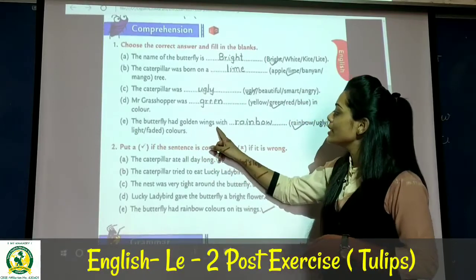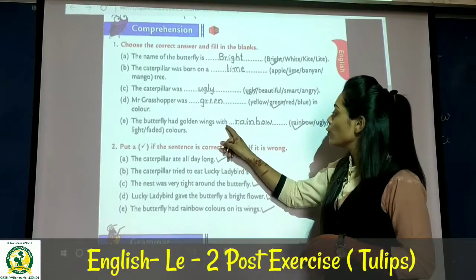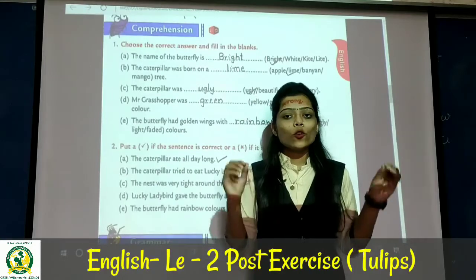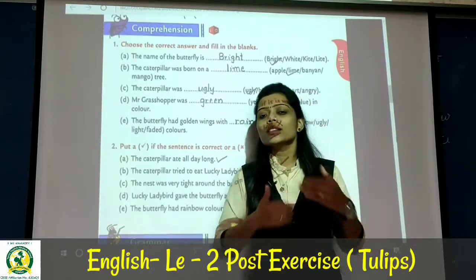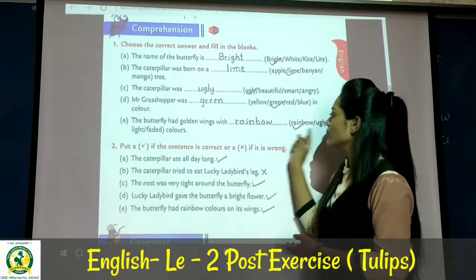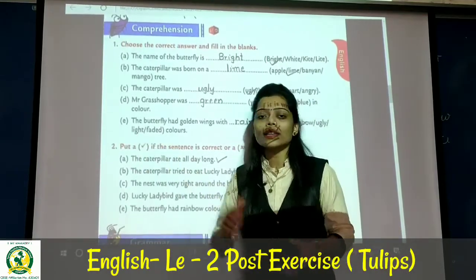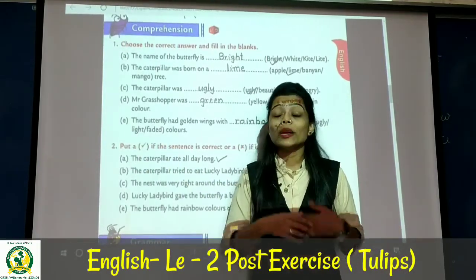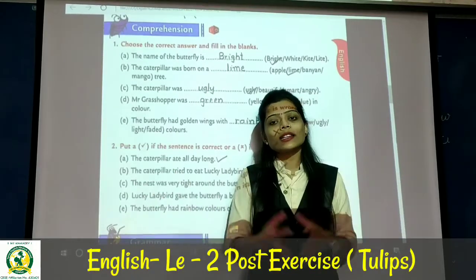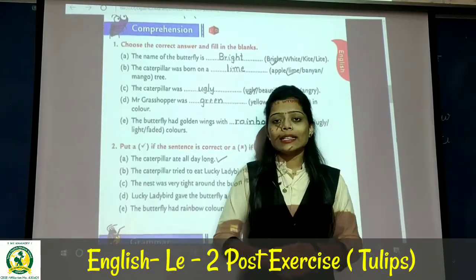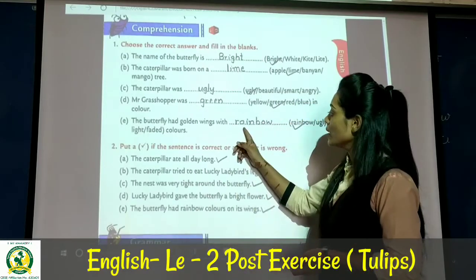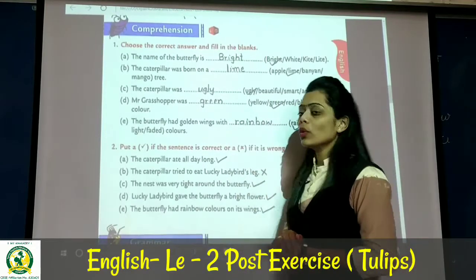Next: the butterfly had golden wings with blank colors. The options are rainbow, ugly, light, or faded. The butterfly had rainbow colors — many colors together, just like a rainbow has seven colors. So write 'rainbow' here.